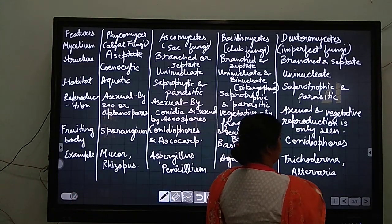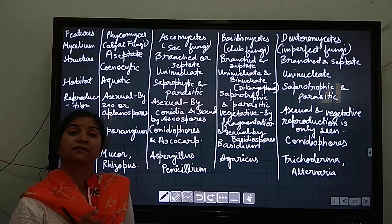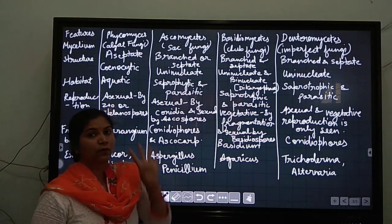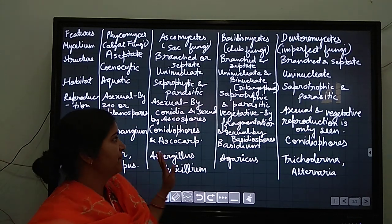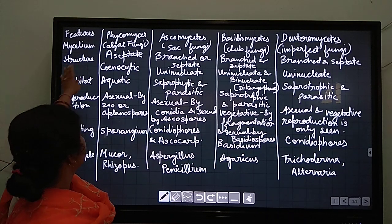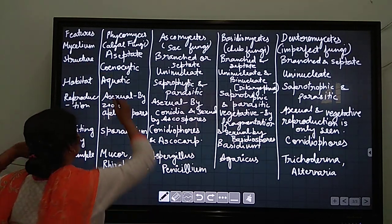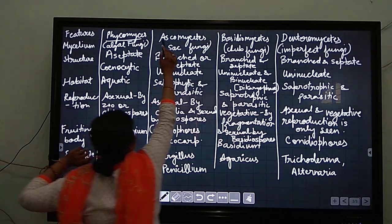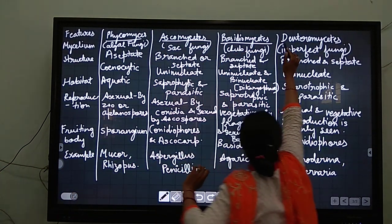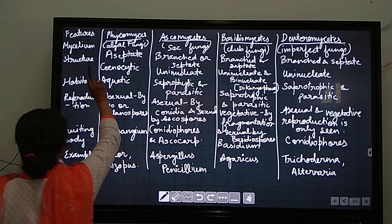Now we will move to the next, which is the subdivision or division. There are four divisions of the kingdom fungi. I have made a table so that it is easy to learn for you. Features are: number one is mycelium structure, and the four divisions are phycomycetes, ascomycetes, basidiomycetes, and deuteromycetes.